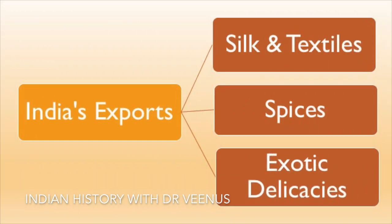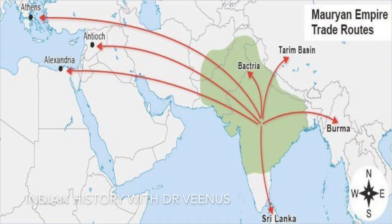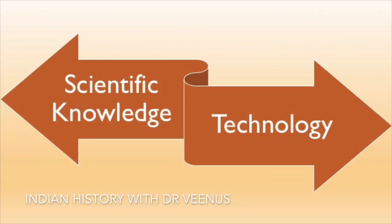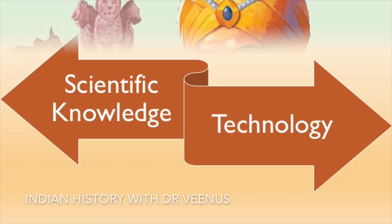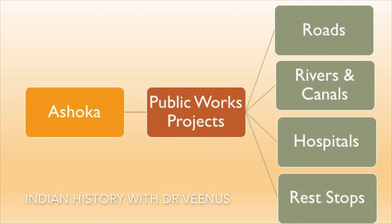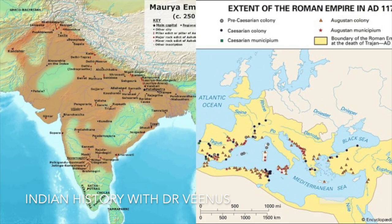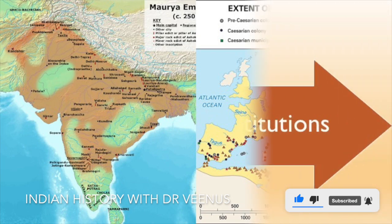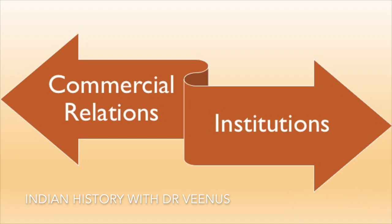The Mauryan dynasty's trade included silk and textiles, spices and exotic delicacies among India's exports. With increased commerce with the Mauryan Empire, the outside world gained access to new scientific knowledge and technology. Ashoka funded the building of hundreds of roads, rivers, canals, hospitals, rest shops and other public works projects. In many aspects, the Mauryan Empire's economic state parallels that of the Roman Empire some centuries later, as both had substantial commercial relations and institutions that were akin to companies.